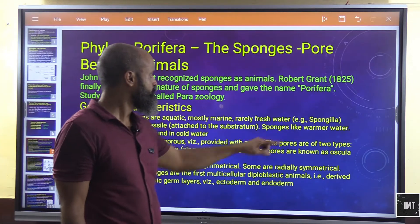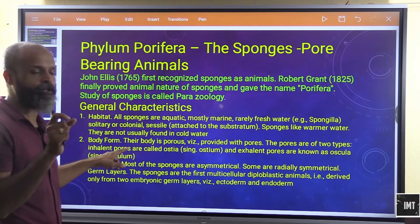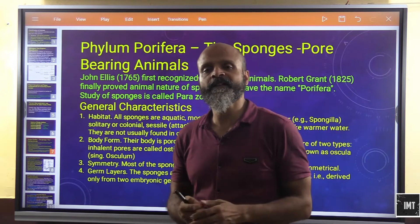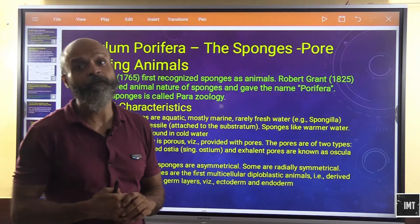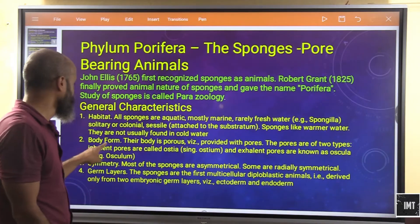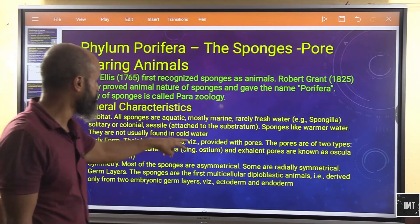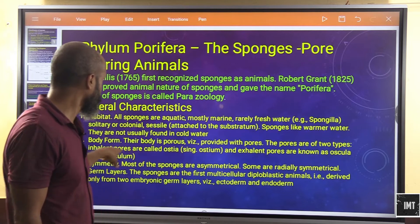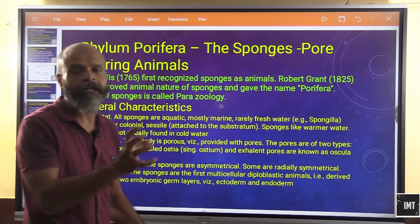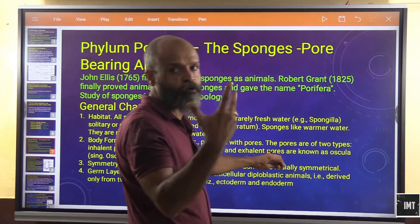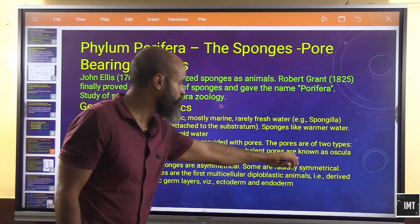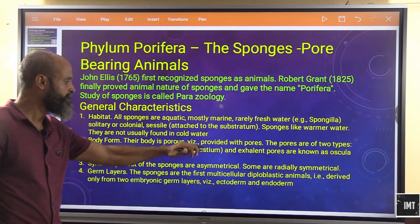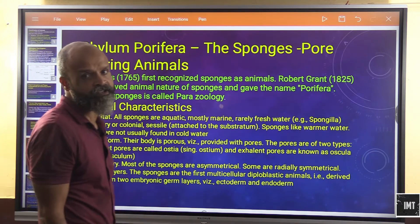Sponges can be sessile, meaning attached to the substratum, similar to plants. They prefer warmer ocean water and are generally not found in cold waters or regions with significant temperature drops. Their body is porous, with two types of pores: inhalant pores called ostia (singular: ostium) and exhalant pores called oscula (singular: osculum) through which waste exits.